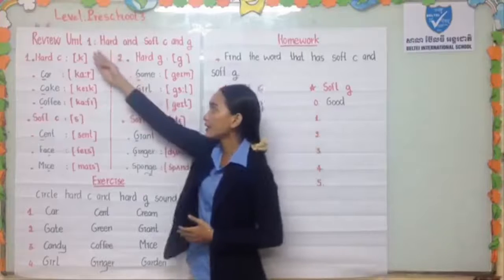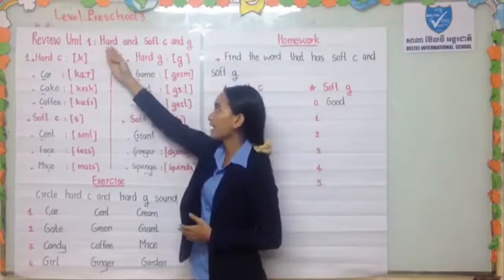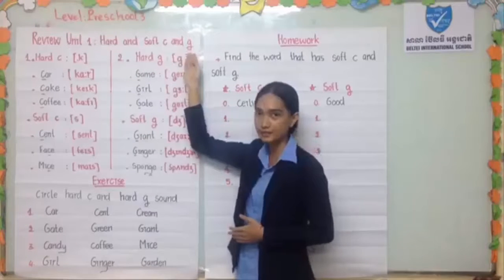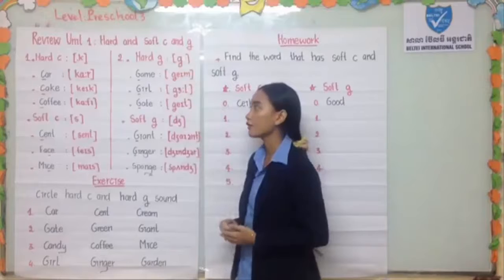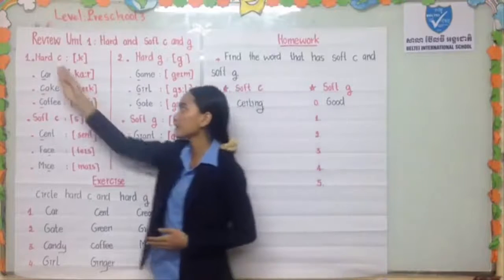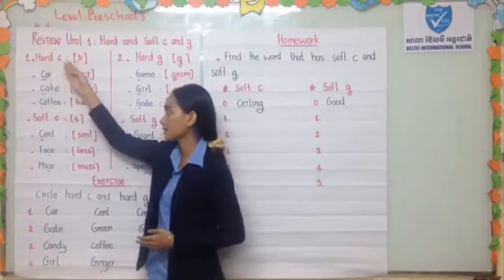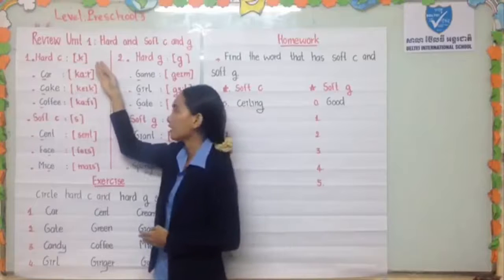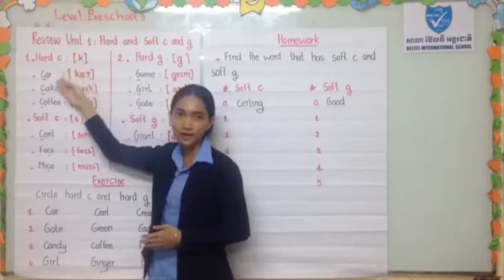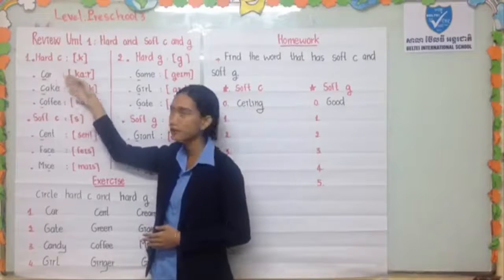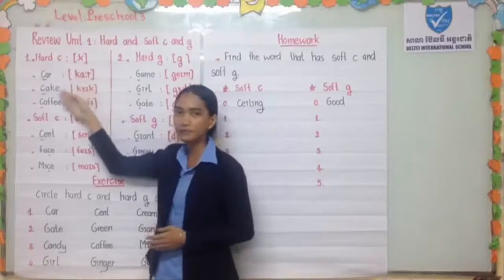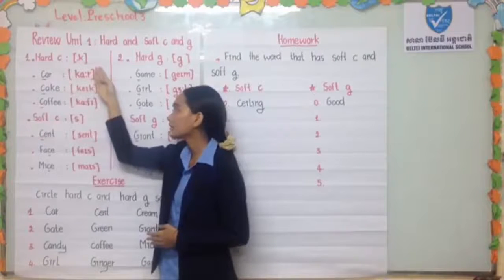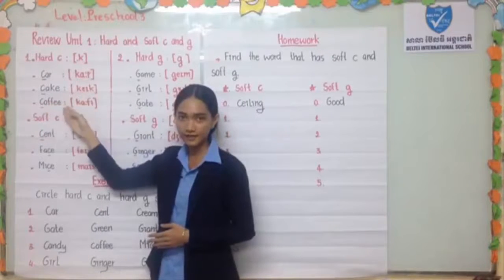Unit 1 is about hard and soft C and G. For number 1, hard C makes the 'Kh' sound. Examples are: Can, Cake, and Coffee.